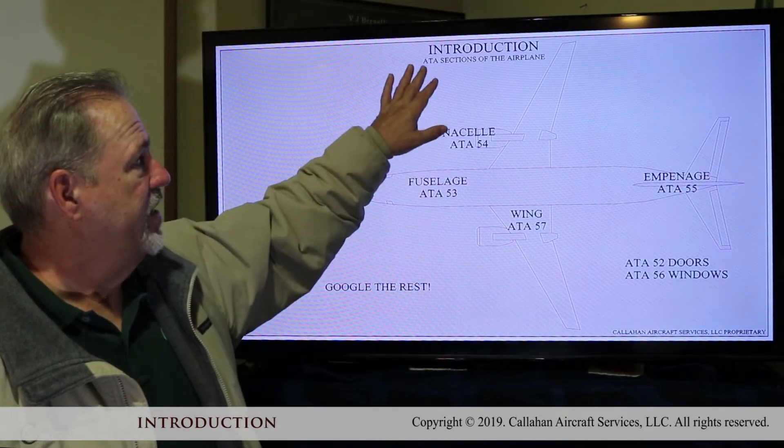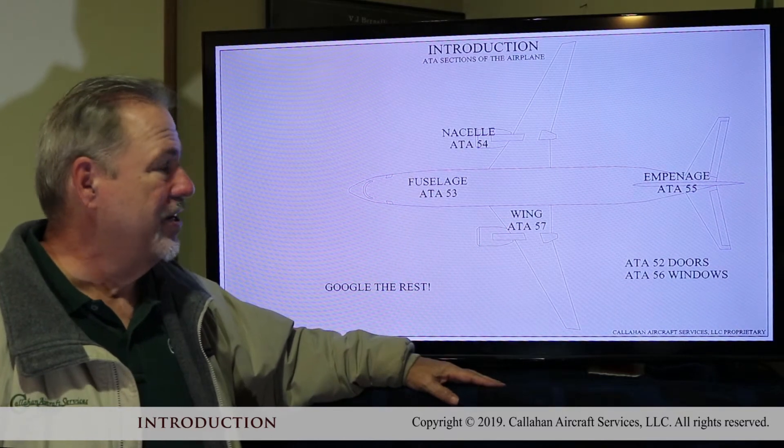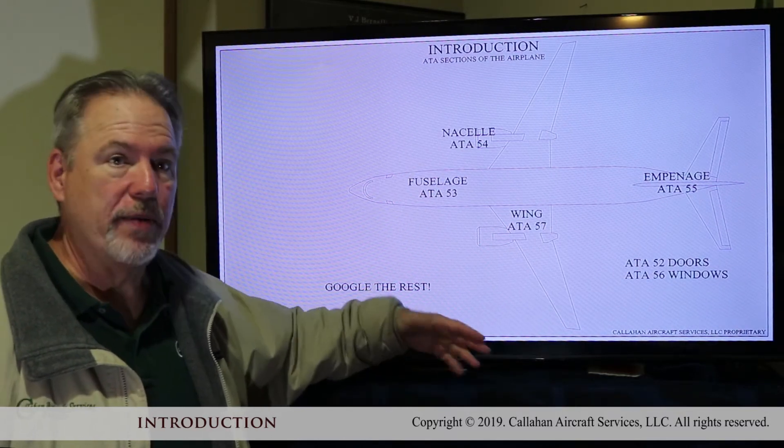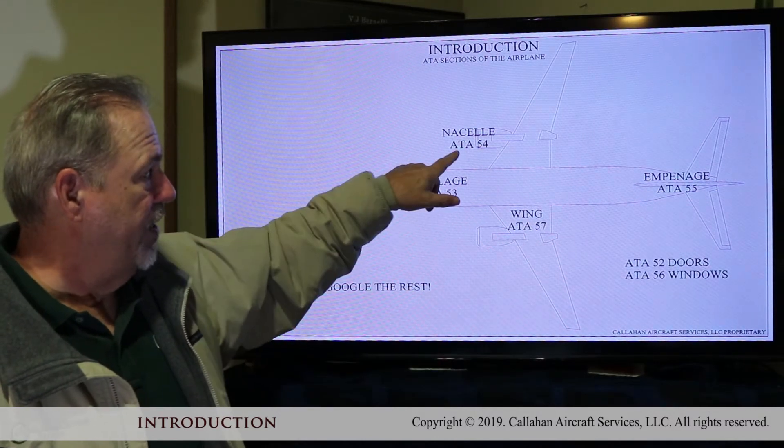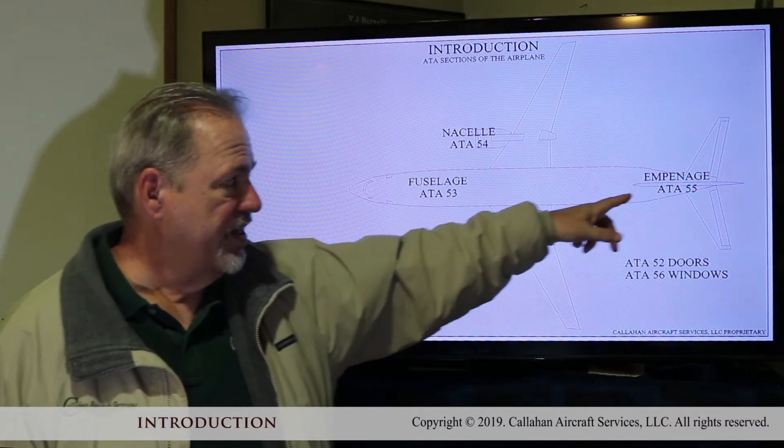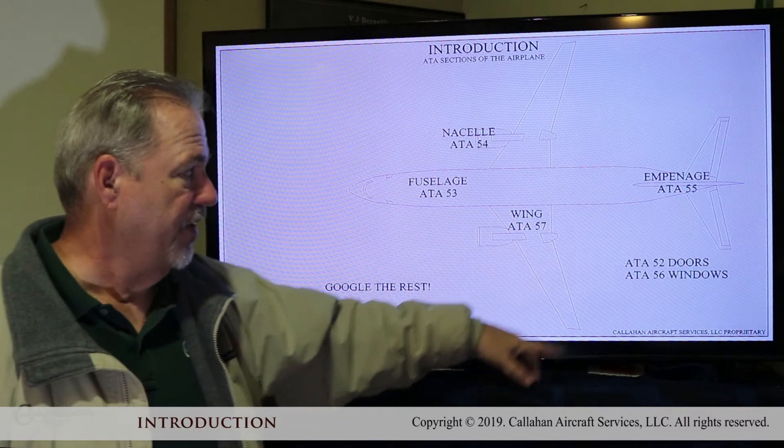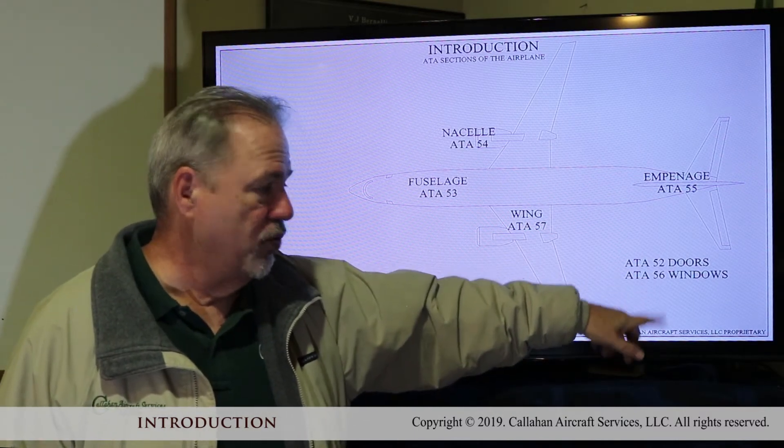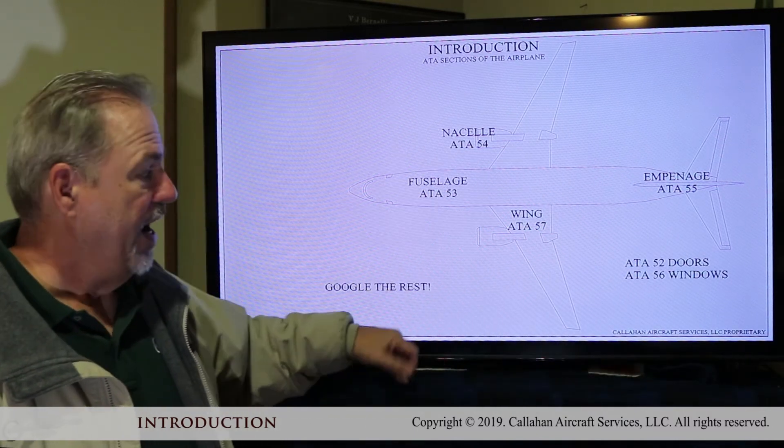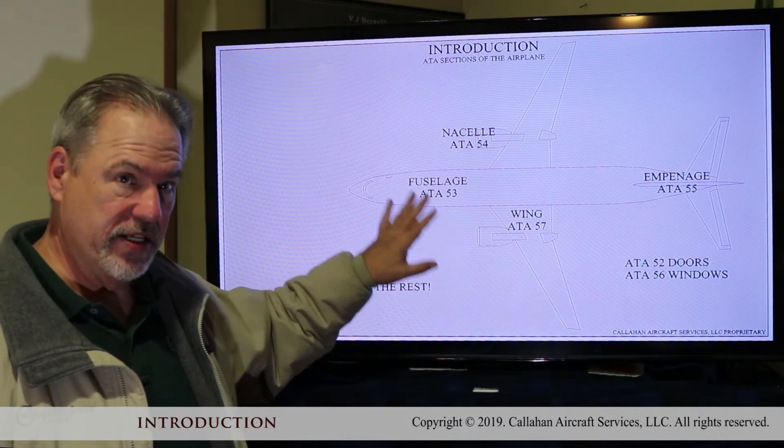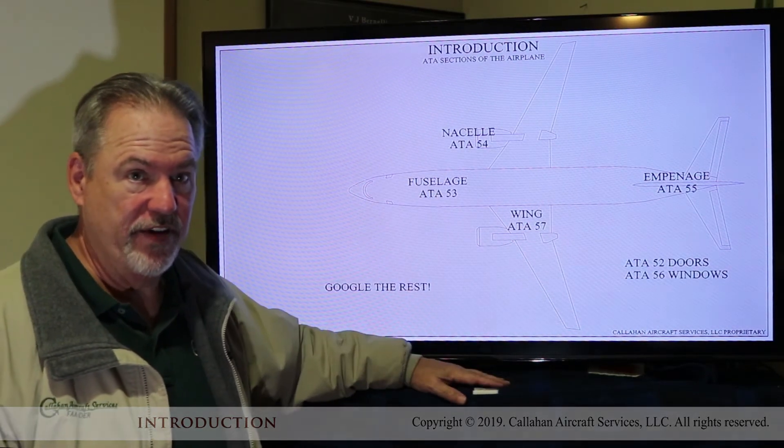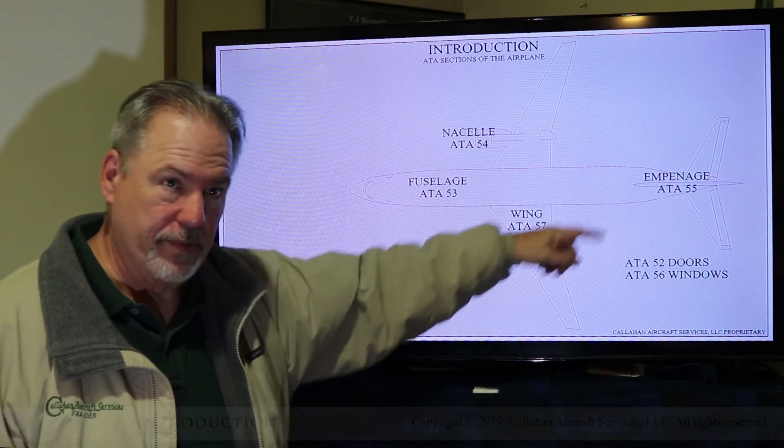Then we come to the ATA sections. This is an association. A long time ago, they numbered all the sections. A fuselage is 53, nacelle is 54, wing is 57, empennage is 55, doors 52, windows are 56. You can, like I said, google the rest. But this is just to give you an idea when they say we've got an ATA of 55, we're in the empennage.